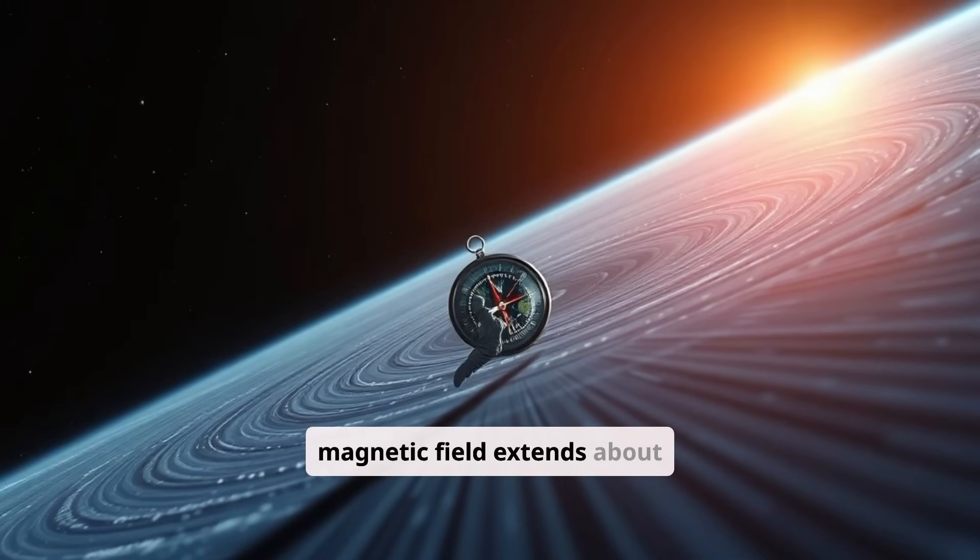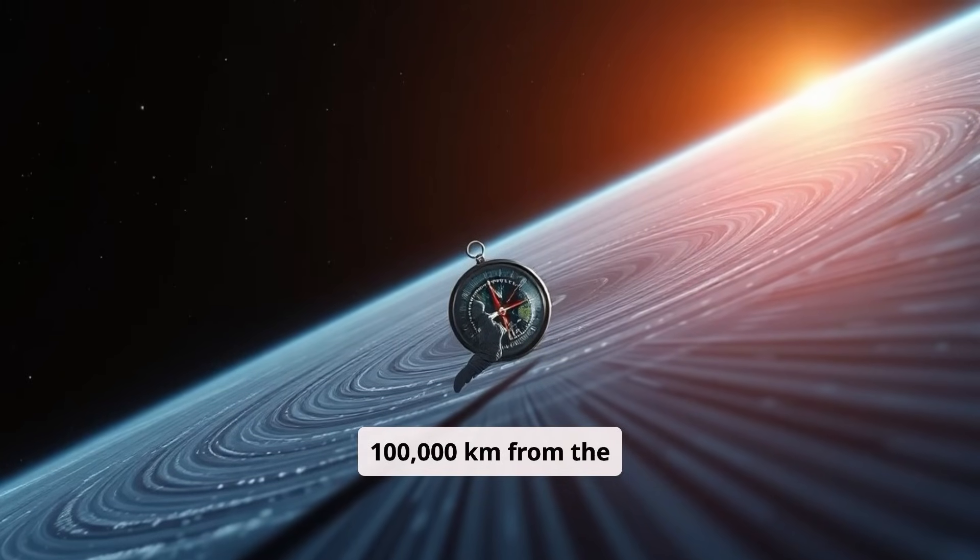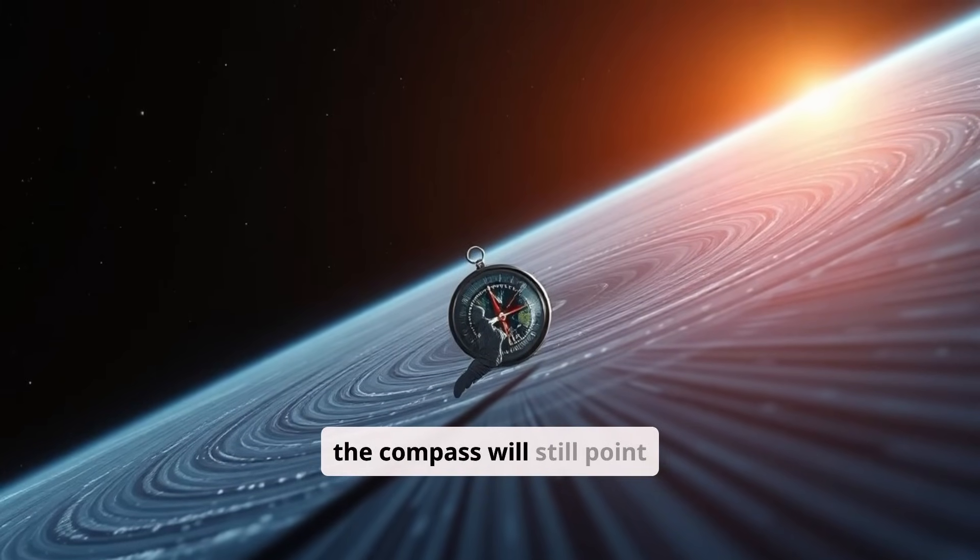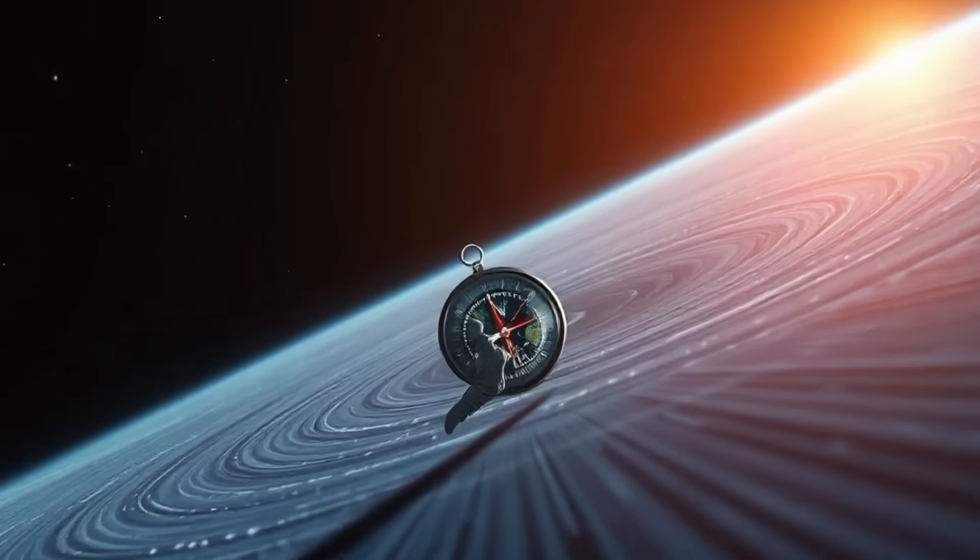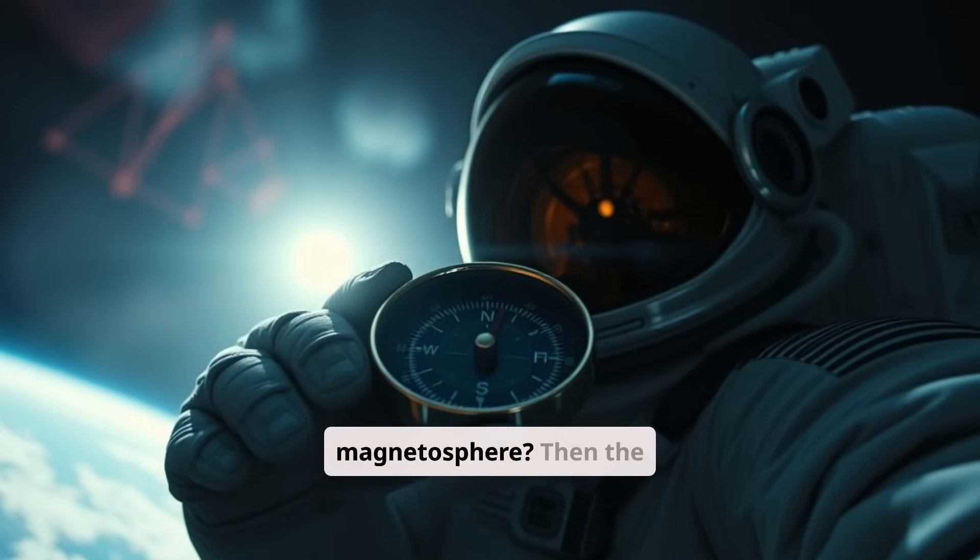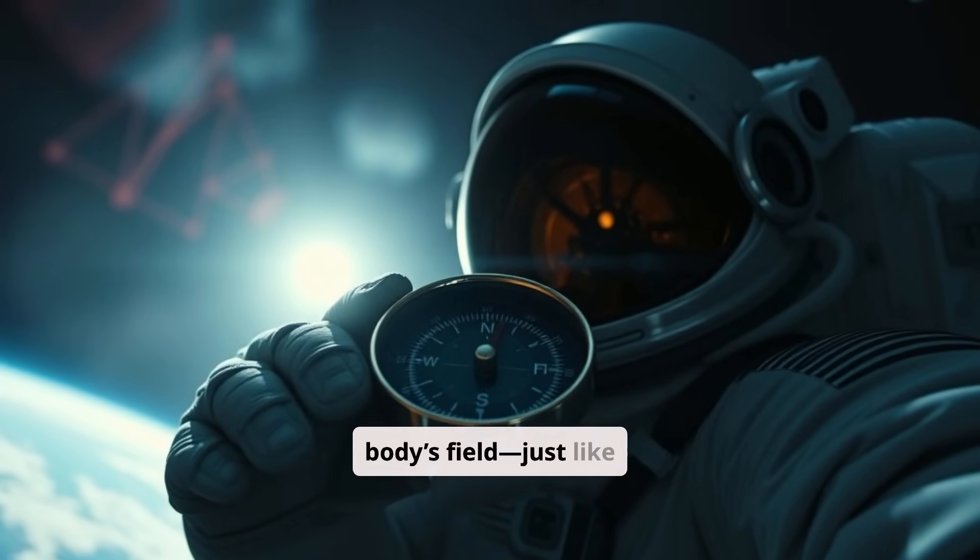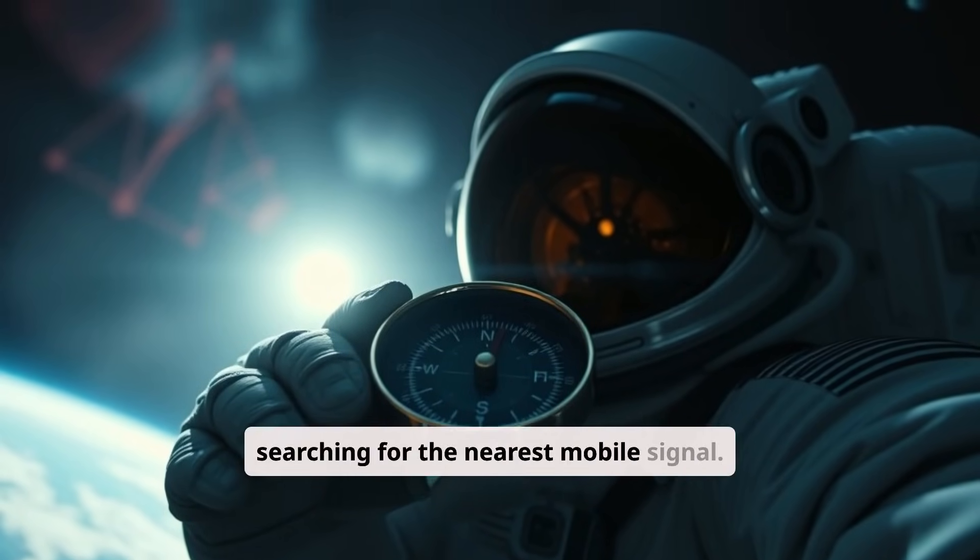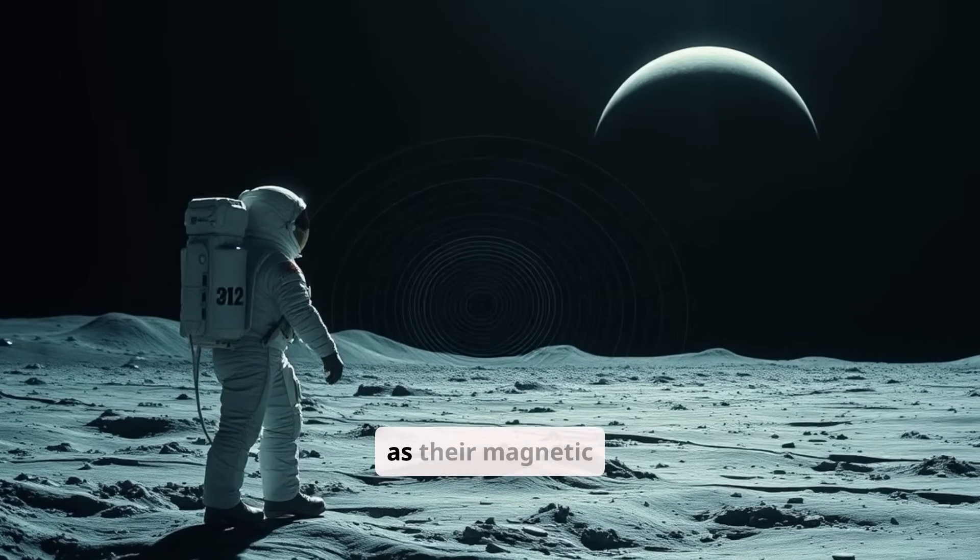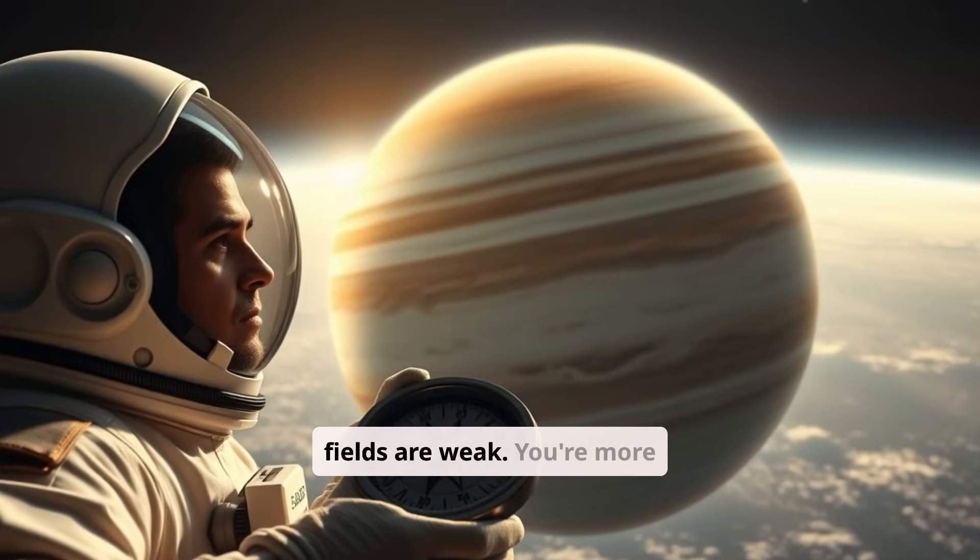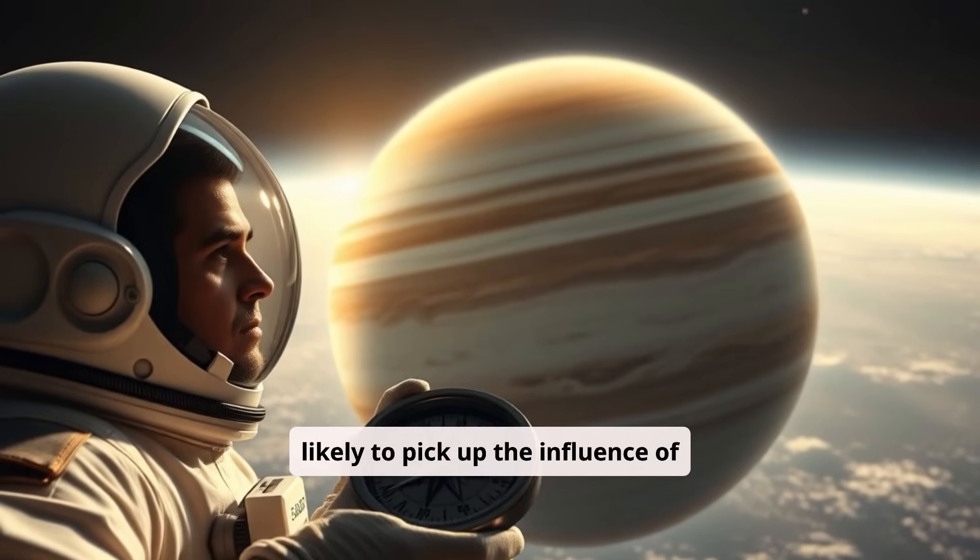Earth's magnetic field extends about 100,000 km from the planet, so within that range, the compass will still point toward Earth's magnetic north. But if we move beyond the magnetosphere, then the compass will latch onto another body's field, just like searching for the nearest mobile signal. Around the Moon or Mars, the compass would need to be very close, as their magnetic fields are weak. You're more likely to pick up the influence of Jupiter.